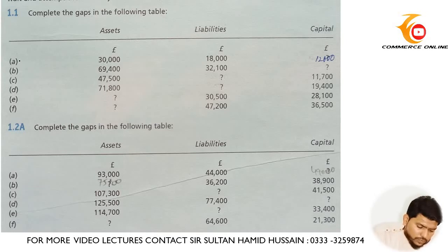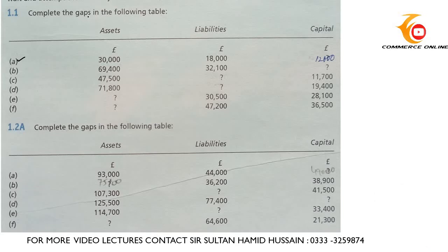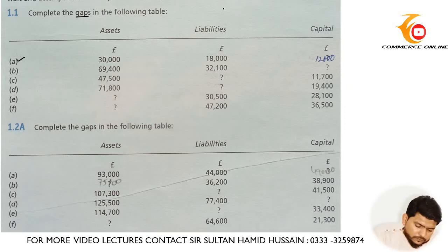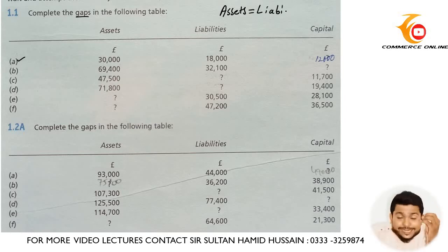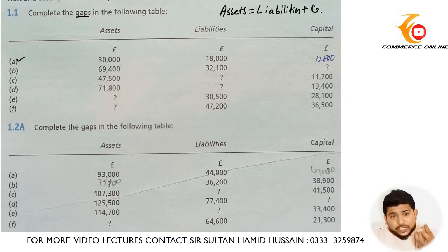The first question is that you have assets of 30,000 and liabilities of 18,000. You need to find out the gap between assets and liabilities. As we know, the basic accounting equation is: Assets = Liabilities + Capital.